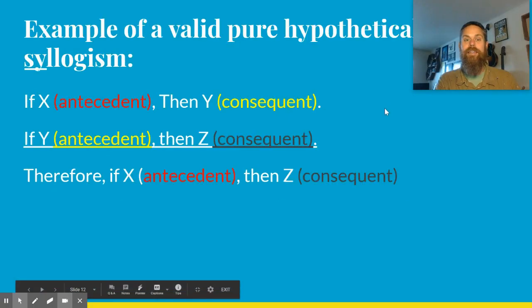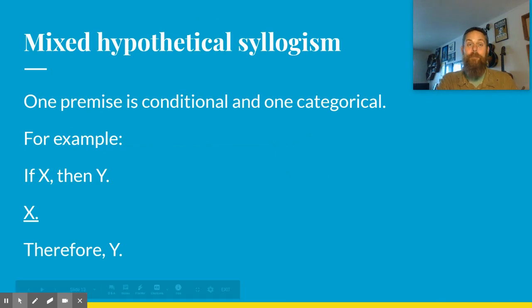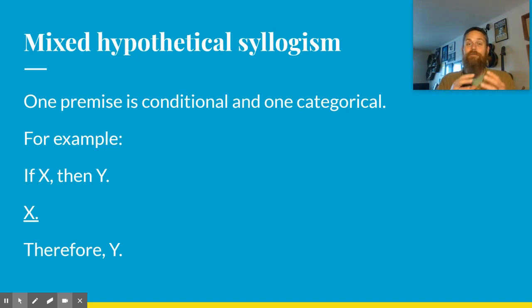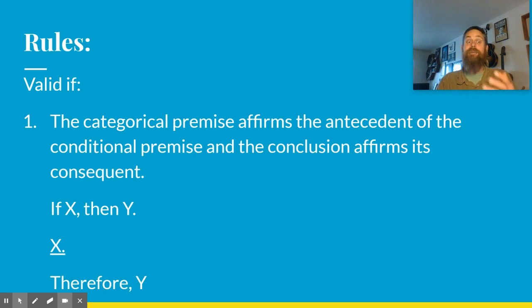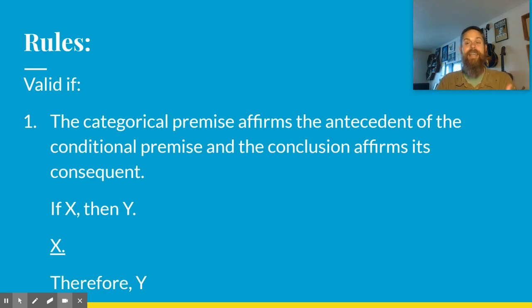We also have mixed hypothetical syllogisms, where one premise is conditional and one is categorical. They look like: if X then Y (conditional premise); X (categorical premise); therefore Y. The rule is: the categorical premise must affirm the antecedent of the conditional premise — so saying 'X' affirms the antecedent. And the conclusion must affirm the consequent of the conditional premise — so 'therefore Y' confirms the consequent. A straightforward rule, but it can get confusing.